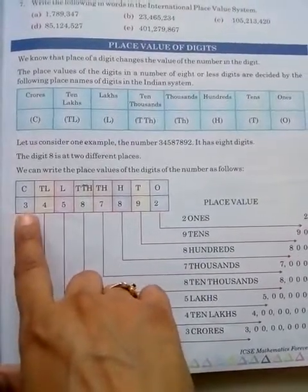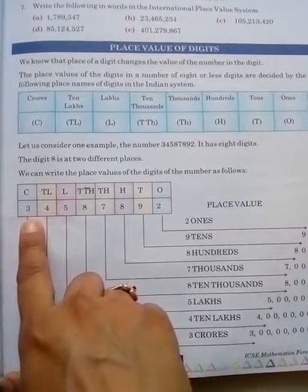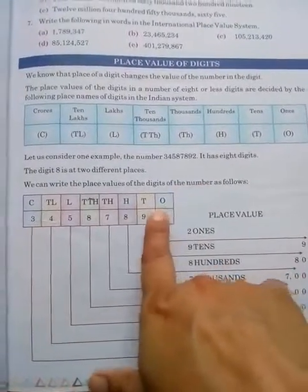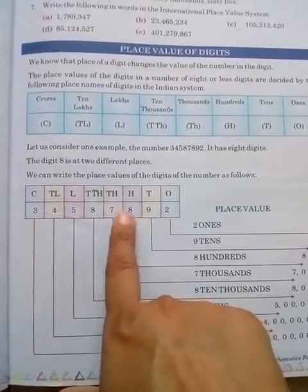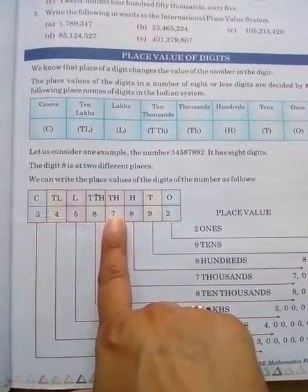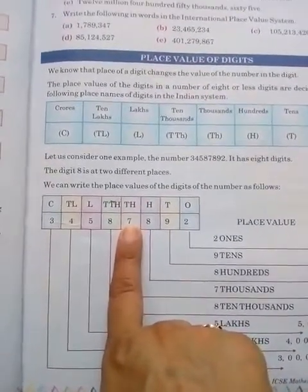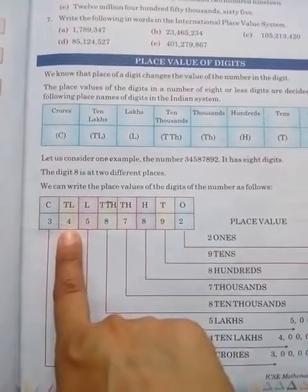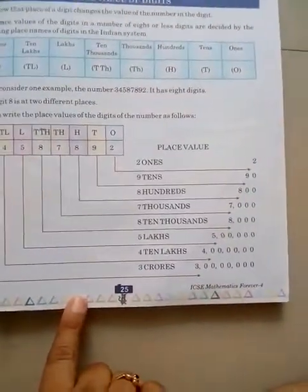By each and every number name of the digit, it is clear what the place value is. Place value basically means what is the place of a particular digit in the given number. Like the place value of 2 is ones, 9 is tens, 8 is hundreds, 7 is thousands — seven thousand means the place value of seven is one thousand, and if you write the place value of seven it will become 7,000. Then 80,000, five lakh, forty lakh, and three crore, as they are writing it over there.